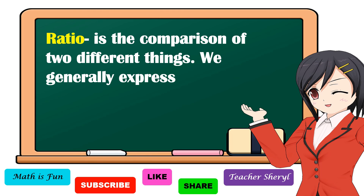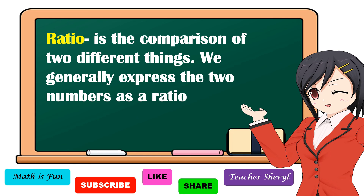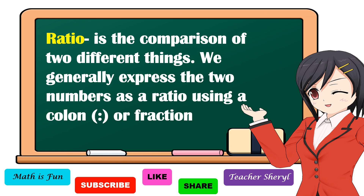To sum it all up, ratio is the comparison of two different things. We generally express the two numbers as a ratio using a colon or fraction form. I hope that you understood our lesson for today. Until next time, thank you for watching.